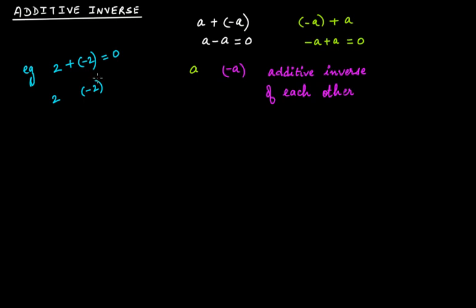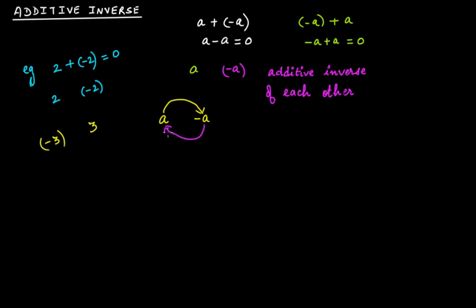Additive inverse means that number which, when added to any particular integer, will make it zero. If your integer is minus three, what is the additive inverse of minus three? It is three. Minus three and three are additive inverse of each other. That is, if a is an integer, then minus a will be its additive inverse, and minus a is its additive inverse. A is additive inverse of minus a, and minus a is additive inverse of a. So that's the concept of additive inverse.